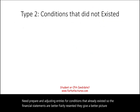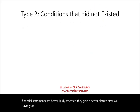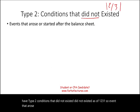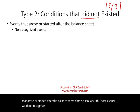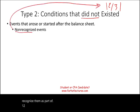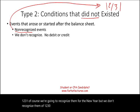Now we have Type 2 — conditions that did not exist as of 12/31. These are events that arose or started after the balance sheet date, for example January 5th. For those events, we don't recognize them as part of 12/31. Of course we will recognize them for the new year, but we don't recognize them as of 12/31. So there is no debit and credit for 12/31.